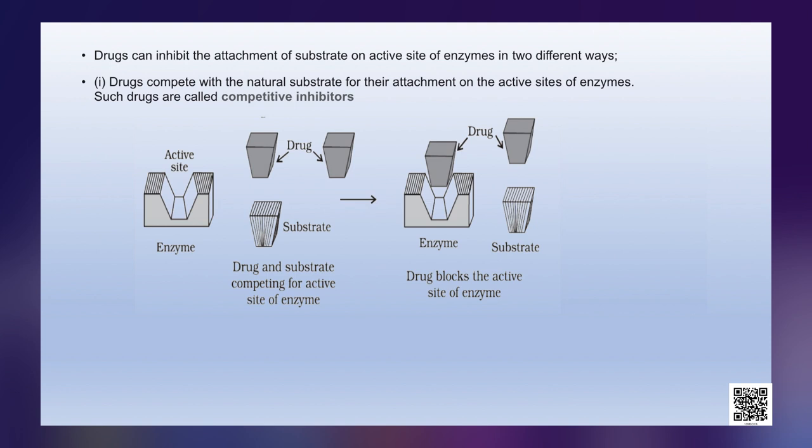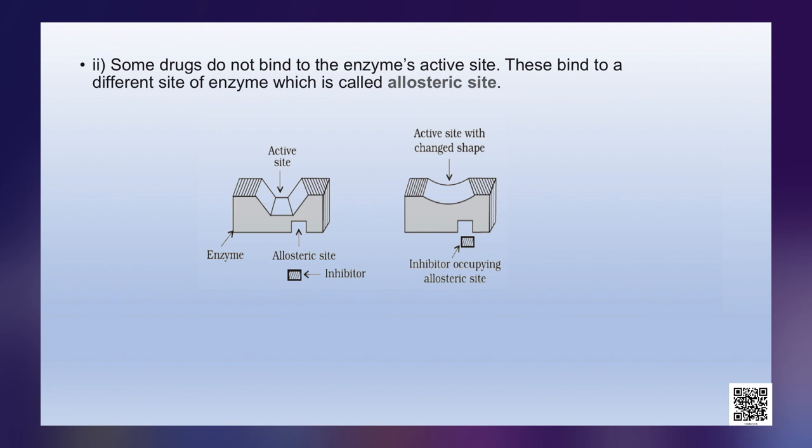Some drugs do not bind to the enzyme's active site. Instead, they bind to a different site called the allosteric site. This binding of the inhibitor at the allosteric site changes the shape of the active site in such a way that the substrate cannot recognize it. As you can see in the picture, the drug attaches to the enzyme at a different place — not at the active site — so the shape of the active site changes and the substrate does not fit into it.